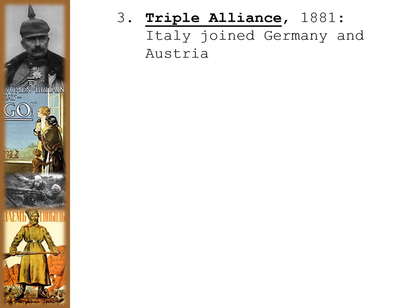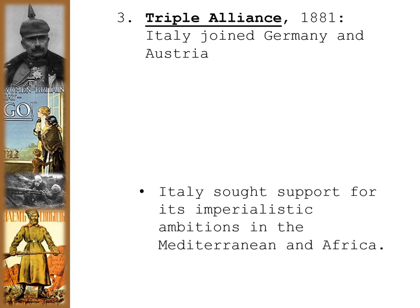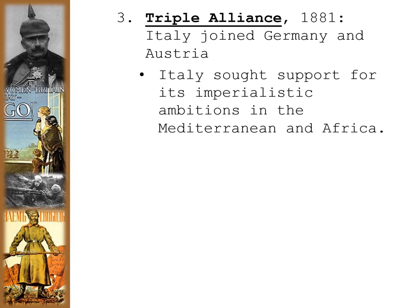The Triple Alliance forms in 1881, where Italy joined Germany and Austria. However, it's important to note that Italy will actually switch sides in 1915 after the first year of the war. Italy starts on the side of the Triple Alliance, also known as the Central Powers, but will switch and join the Allied Powers — the Triple Entente — in 1915. Italy sought support for its imperialistic ambitions in the Mediterranean and in Africa, especially trying to take Ethiopia, though that didn't work until after World War I.